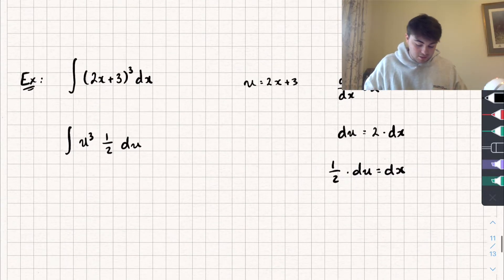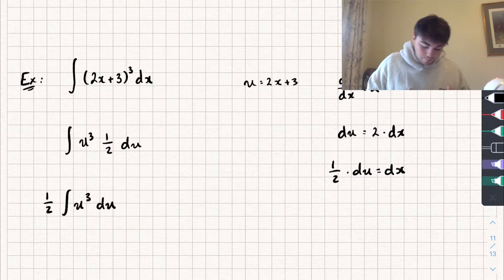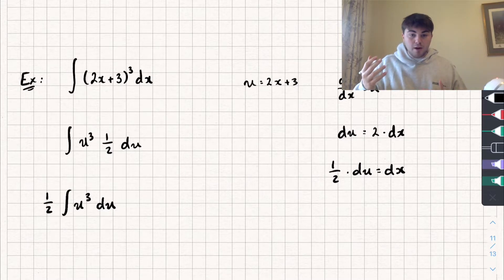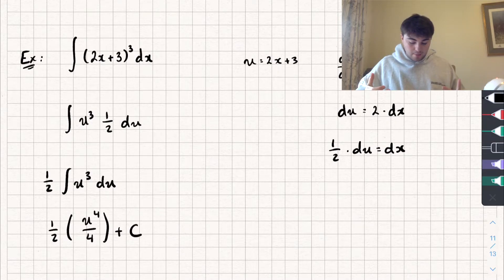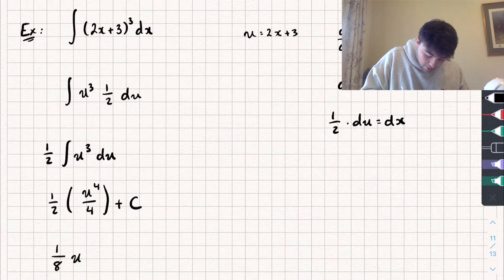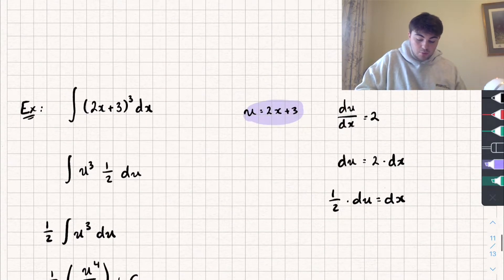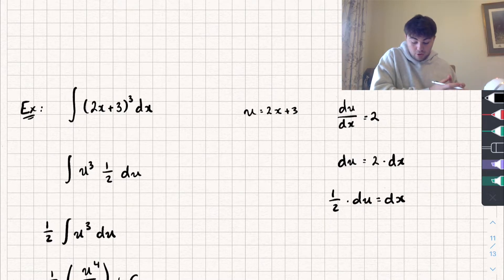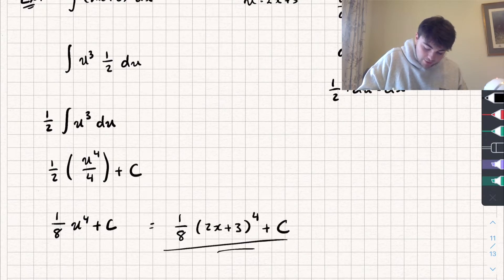So we have one-half multiplied by the integral of u cubed with respect to u, which is easy to calculate. We add one to the power and divide by the new power, giving (1/2) × (u⁴/4) + c, which simplifies to (1/8)u⁴ + c. Since we said u = 2x + 3, substituting back gives our final answer: (1/8)(2x + 3)⁴ + c.